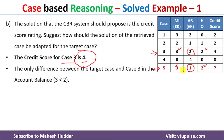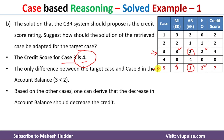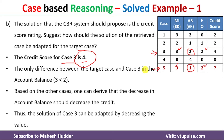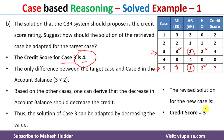Looking at the other examples, as the value of account balance decreases, the credit score also decreases. Since the target case account balance is less than the third case, we need to reduce the credit score. Rather than a credit score of 4, it is better to assign a credit score of 3 for this target case. This is how we adapt the solution considering this target case.